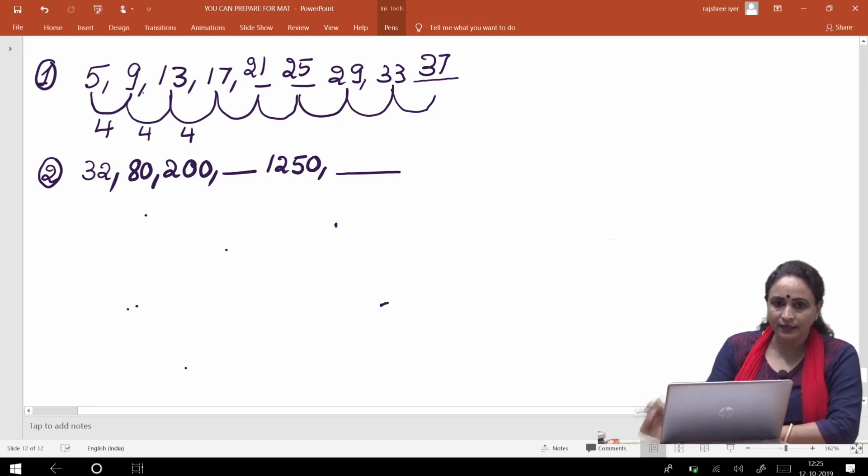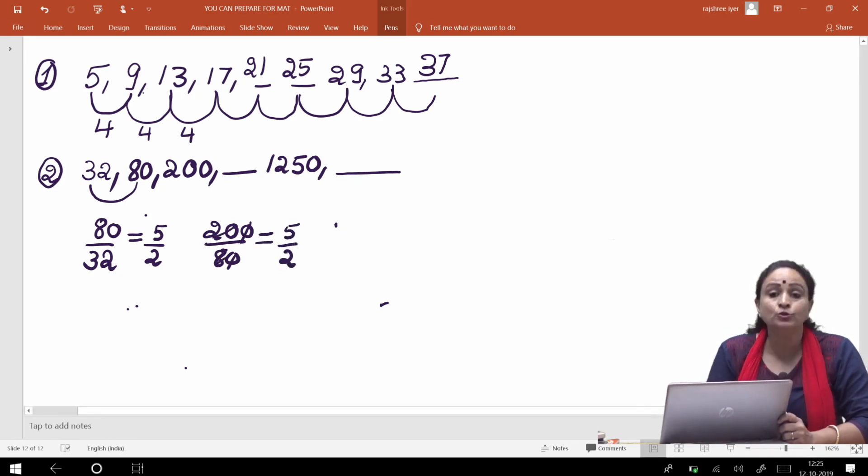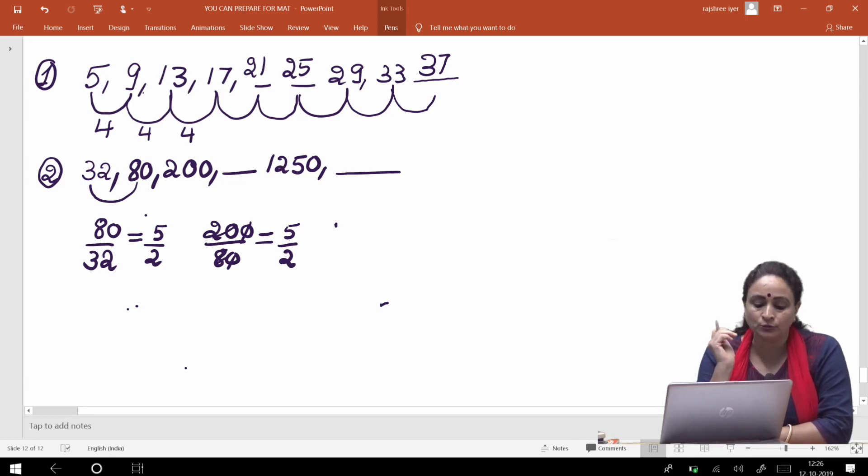Isse padhenge zara dhyaan se dekhenge, toh aapko 80 se - 80 ko agar aapne 32 se divide kiya. So 80 divided by 32, so I get 5 by 2. Now again, 200 divided by 80, that is also equal to 5 by 2. Dikh raha hai, hai na? Toh iska matlab hai ki consecutive terms ko, yani jo dusre term ko pehle term se mein divide karti hoon, aur tisare ko dusare se divide karti hoon, toh ek constant term mil raha hai that is equal to 5 by 2.